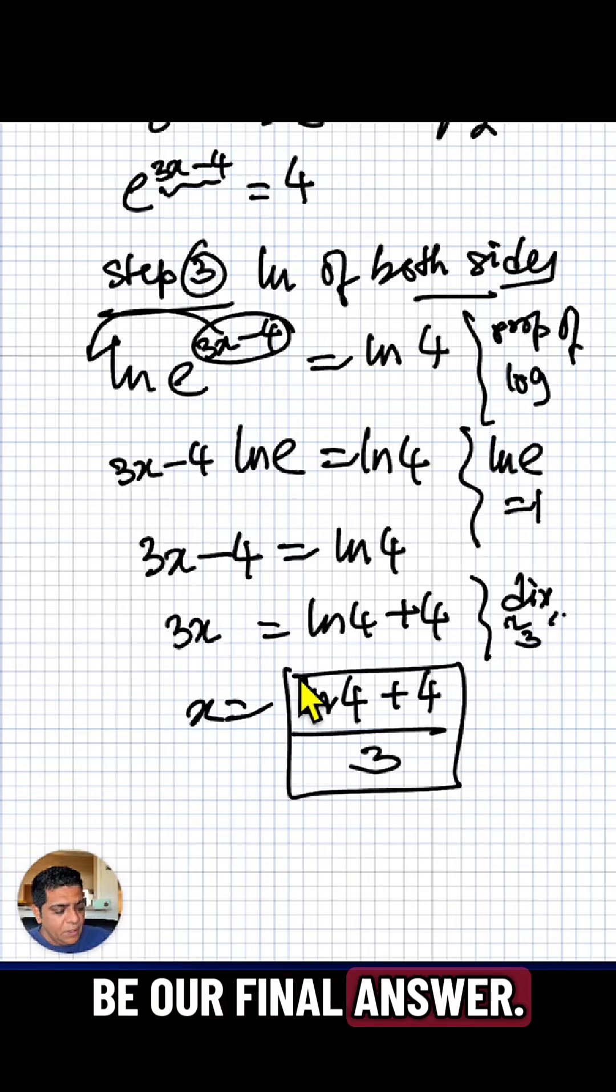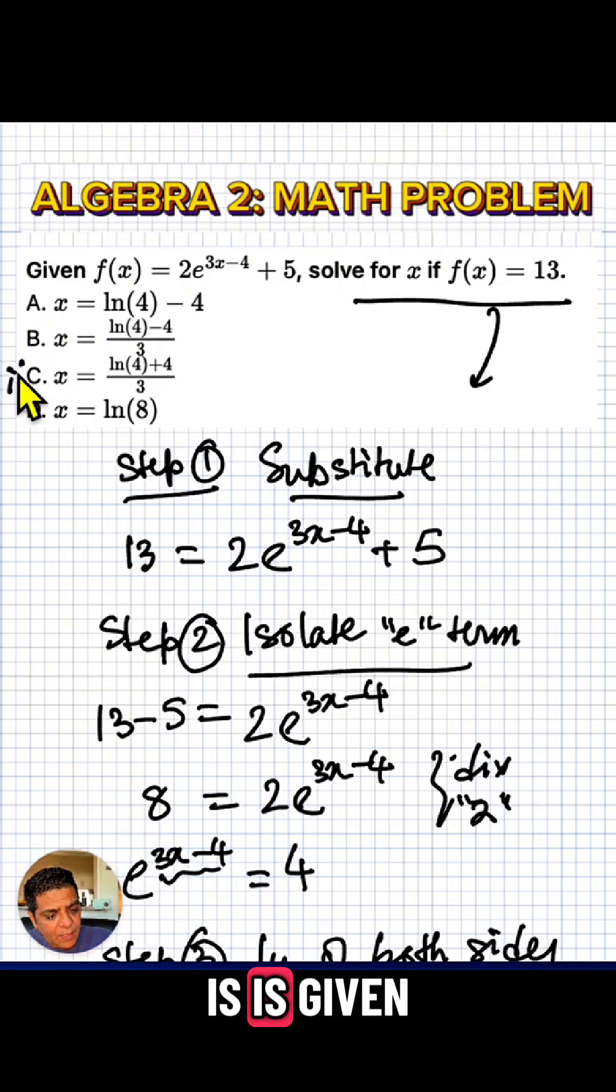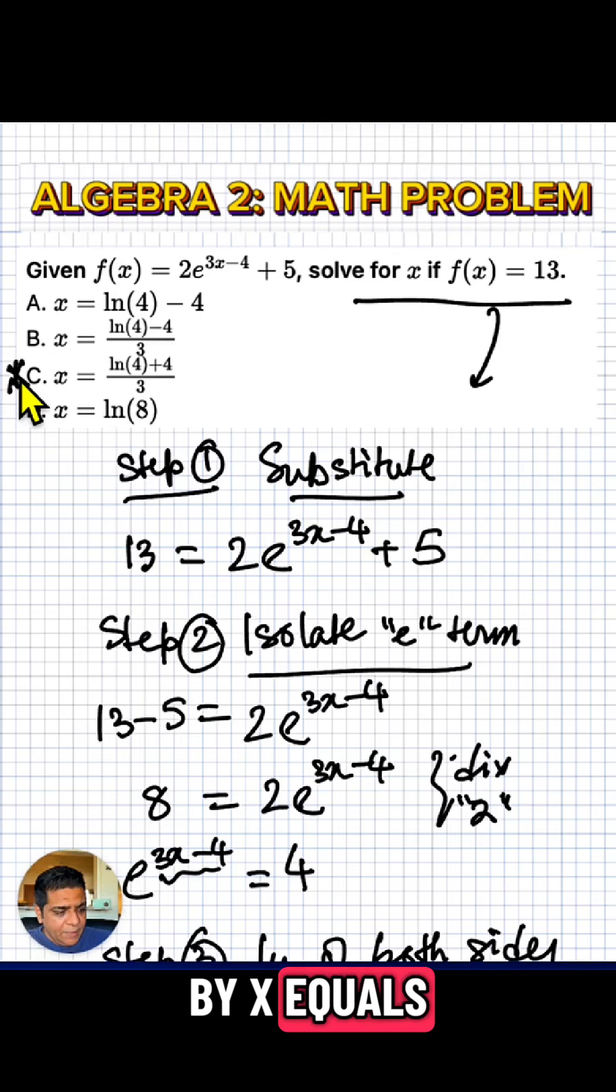That's going to be our final answer and let's see if any of the choices is represented by that. Indeed, choice C is given by x equals ln 4 plus 4 divided by 3.